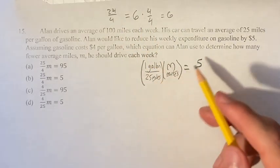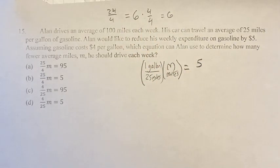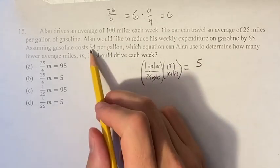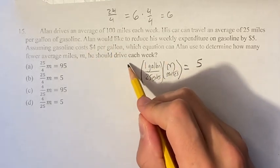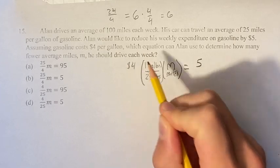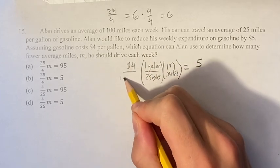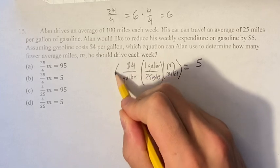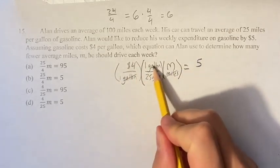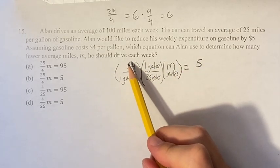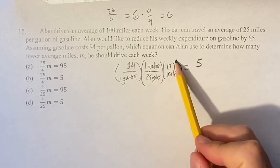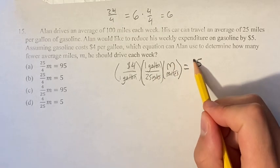So it's a different denominator. In this case, it's a different unit. Now we have it in terms of gallons. We want to get it in terms of dollars. Luckily, we know that gas costs $4 per gallon. So if we have $4 per 1 gallon, then the gallons cancel, and we have 4 over 25 times M is equal to 5.